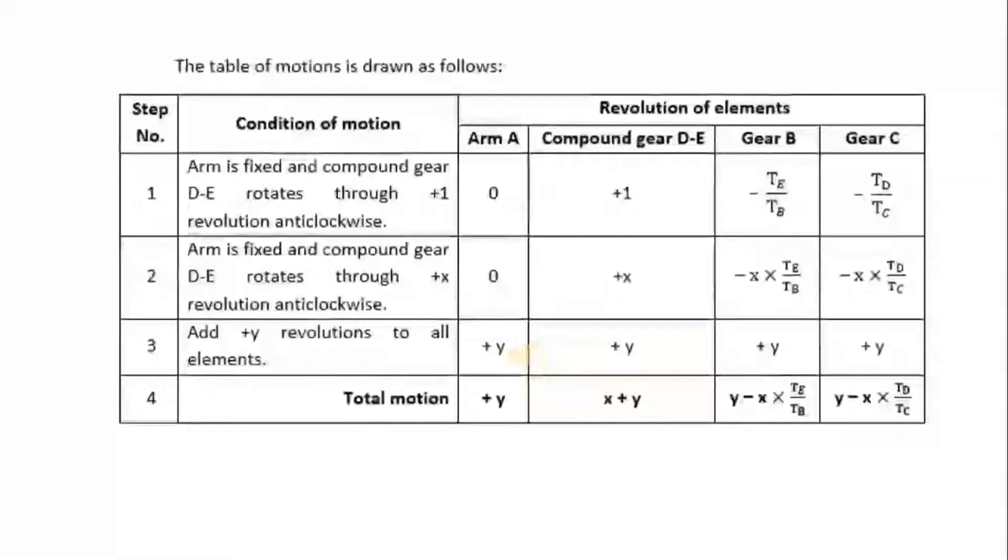So now let us draw the table here. So we have now four components: arm A, the compound gear DE, the gear B and gear C. So when arm is fixed and compound gear DE rotates through +1 revolution anticlockwise, so arm A is fixed 0, so this is +1. Gear B will have -TE/TB and gear C will have -TD/TC.